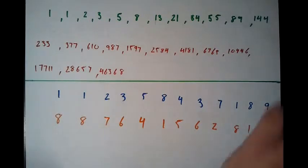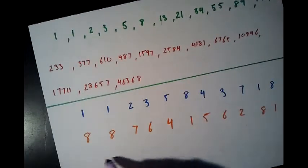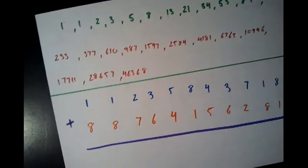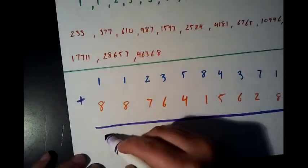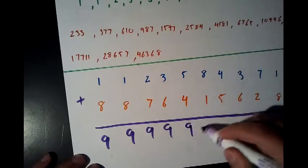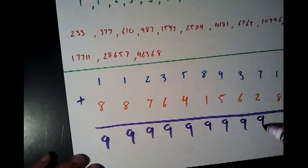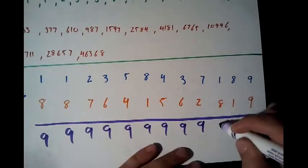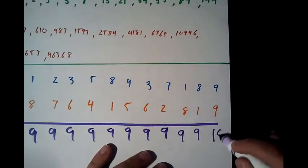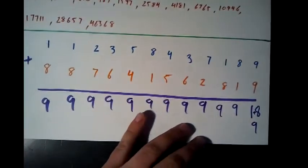Now we're going to add these numeric reductions — pairing the blue and orange values together. Every single pair adds up to 9. We get 9, 9, 9, 9, 9, 9 across all 12 pairs. One pair gives us 18, but if we reduce that, it also becomes a 9.